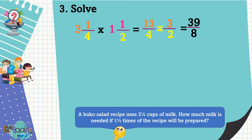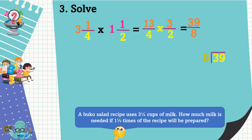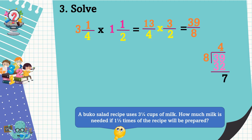Next, multiply both numerators and both denominators: thirteen times three equals thirty-nine, four times two equals eight. Thirty-nine over eight is an improper fraction. To reduce it, divide the numerator by the denominator: thirty-nine divided by eight equals four, with four times eight equaling thirty-two. Thirty-nine minus thirty-two equals seven, so we take seven as the numerator and eight as the denominator.